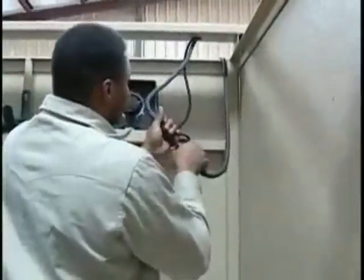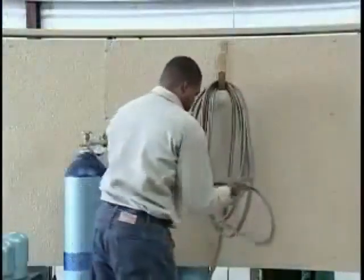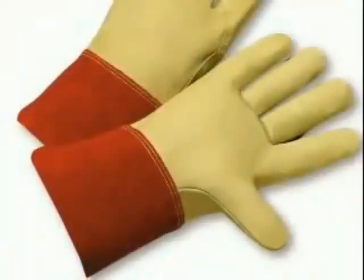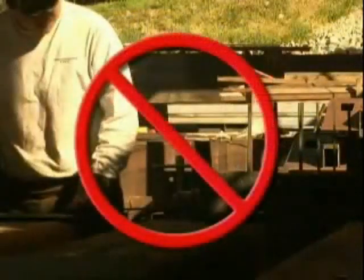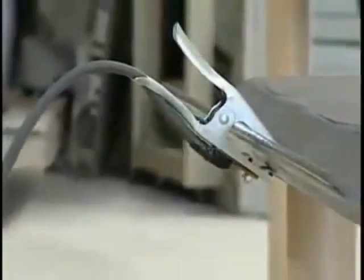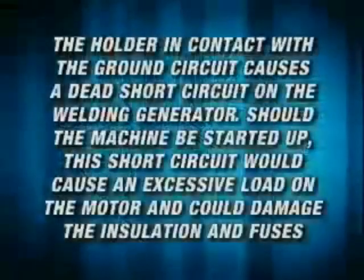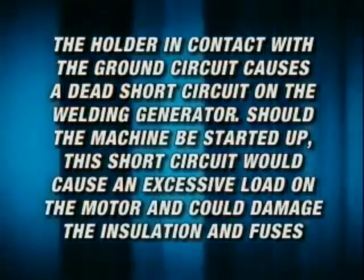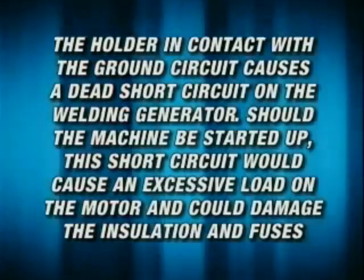When welding is to be interrupted for any substantial period of time, such as during lunch or overnight, OSHA requires that the machine be disconnected from the power source, all electrodes be removed from the holders, and the holders be carefully placed so that accidental contact cannot occur. When changing electrodes, the worker must be on a dry surface and wear gloves. The electrode holder must never be left in contact with the tabletop or other metallic surfaces in direct contact with the welding ground; an insulated hook or holder should be provided. A holder in contact with the ground circuit causes a dead short circuit on the welding generator.